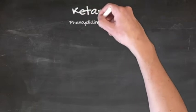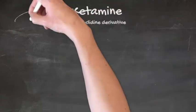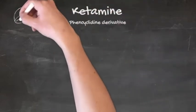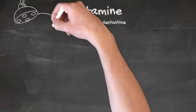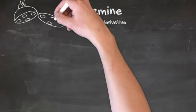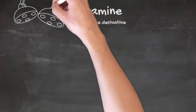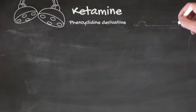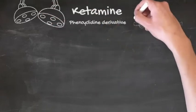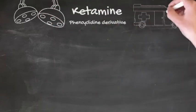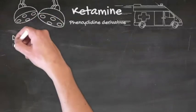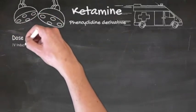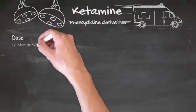Next up we'll look at ketamine, probably the second most common induction agent you'll use. Chemically, ketamine is a phencyclidine derivative, and it's particularly useful in emergency settings for reasons that will become clear in a moment.